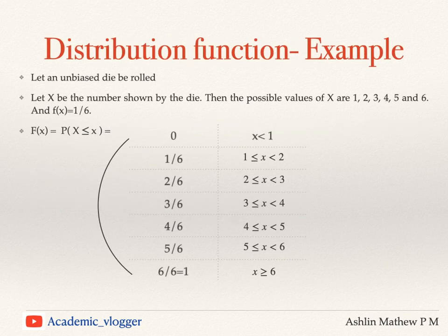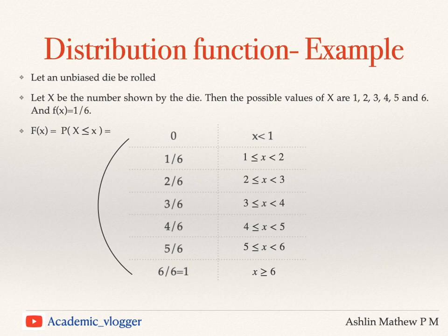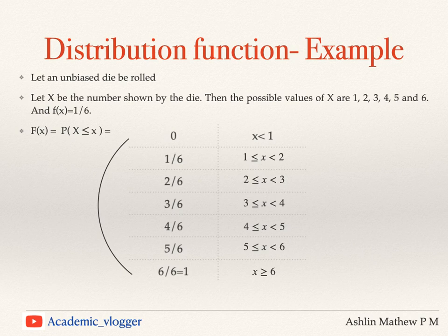Now we shall see an example for the distribution function. Let an unbiased die be rolled. Let X be the number shown by the die. The possible values are 1, 2, 3, 4, 5, and 6. Since the die is unbiased, the probability of getting each of these faces is 1/6. We have to compute the distribution function, F(x) = P(X ≤ x). If x takes a value less than 1, there is no event in the sample space — X less than 1 means there is no such event, so the probability is 0.